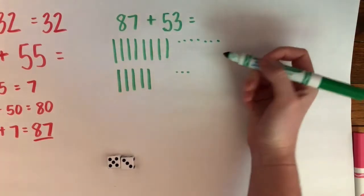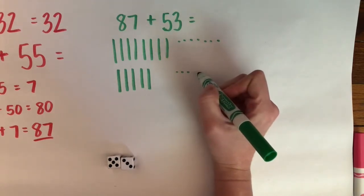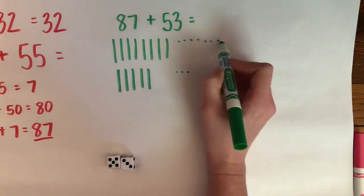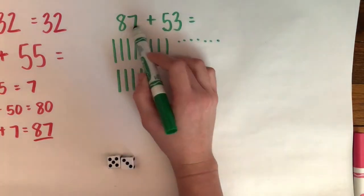So I want to first start by adding my ones together. So it looks like I'm going to be able to make a 10. So I have, let's check: 1, 2, 3, 4, 5, 6, 7, 8, 9, 10. Good. Because I know that 7 + 3 = 10.